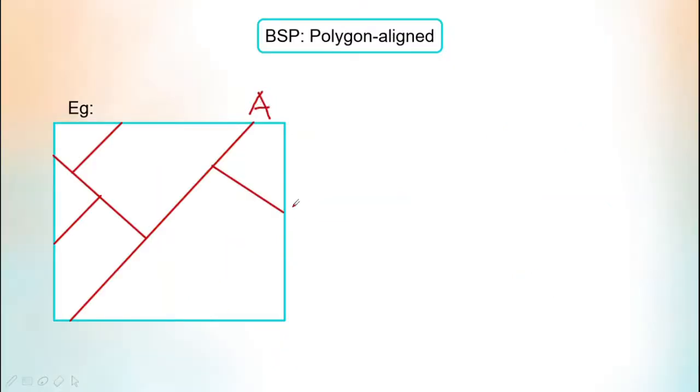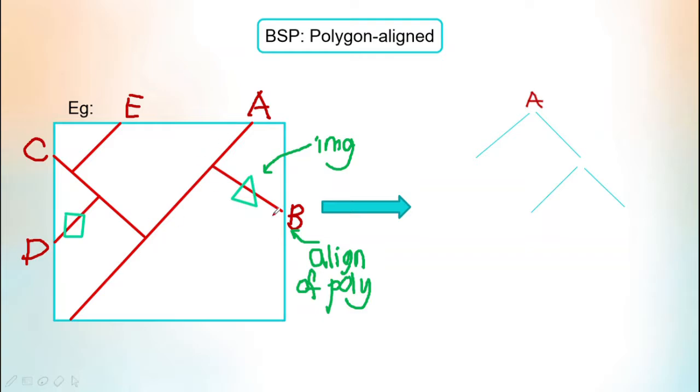Next is about the polygon aligned. It is drawn out particularly the same as the BSP tree for axis aligned because the plane is not in proper axis. So we call them as polygon aligned BSP tree.